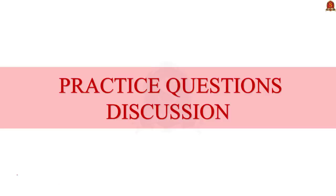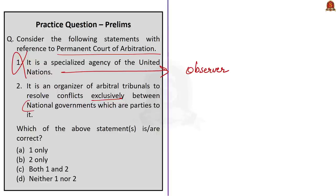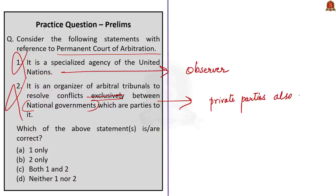Now the practice questions discussion session. The first question is regarding the Permanent Court of Arbitration. Statement 1: it is a specialized agency of the United Nations — this is incorrect because PCA is just an observer in the United Nations, not a specialized agency. Statement 2: it is an organizer of arbitral tribunals to resolve conflicts exclusively between national governments which are parties to it — this is also incorrect because of the word 'exclusively.' PCA resolves conflicts between member states, international organizations, and even private parties. Both statements are incorrect, so the correct answer is option D: neither one nor two.